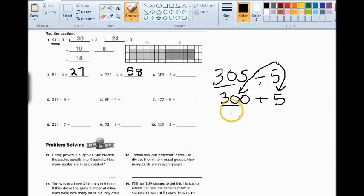So 30 divided by 5. That's 6. But not 6 because this is 30 tens. So this isn't 6. This is 6 tens. So we're going to make that 60. And then 5 divided by 5. Well, remember that whenever a number is divided by itself, you will always get 1. So 5 divided by 5 is 1.